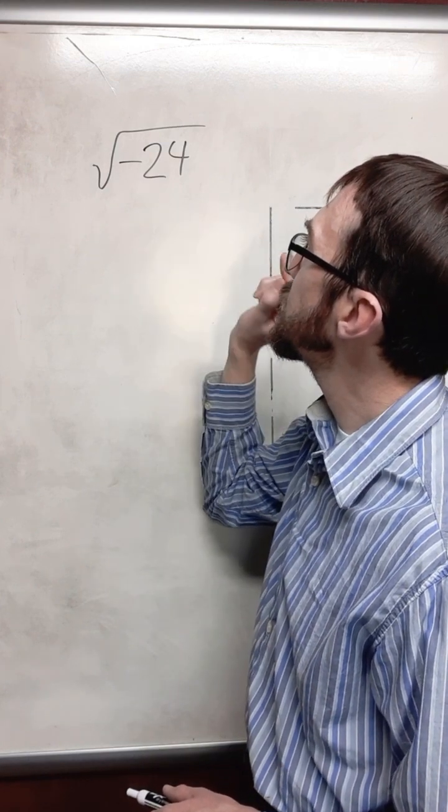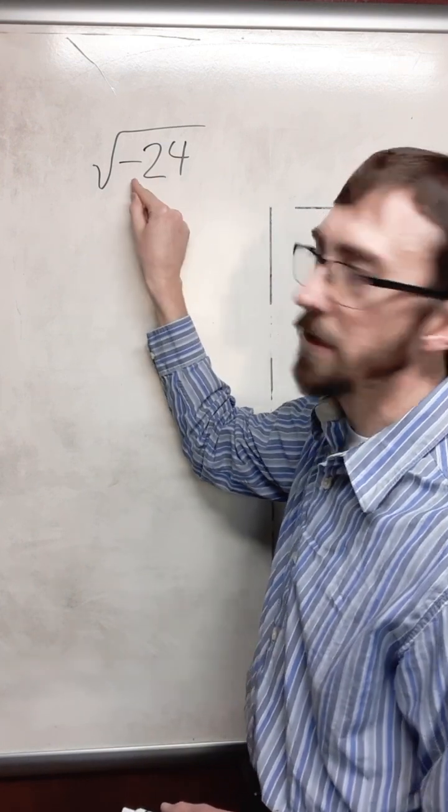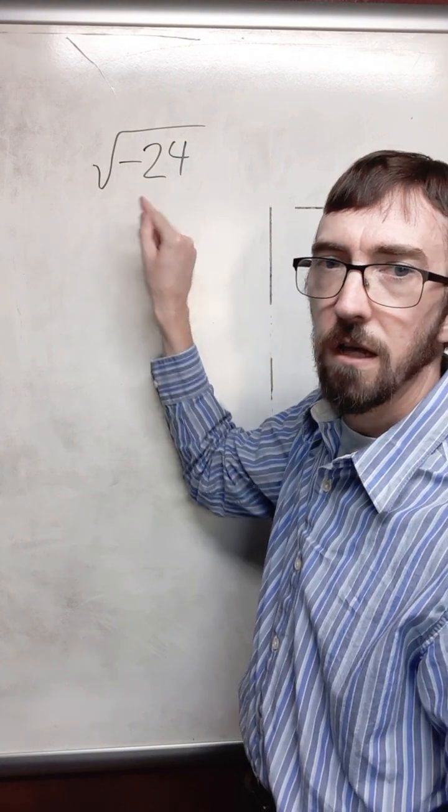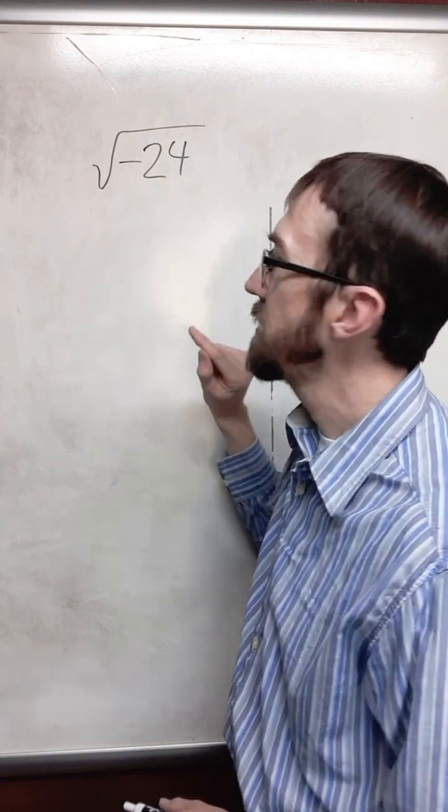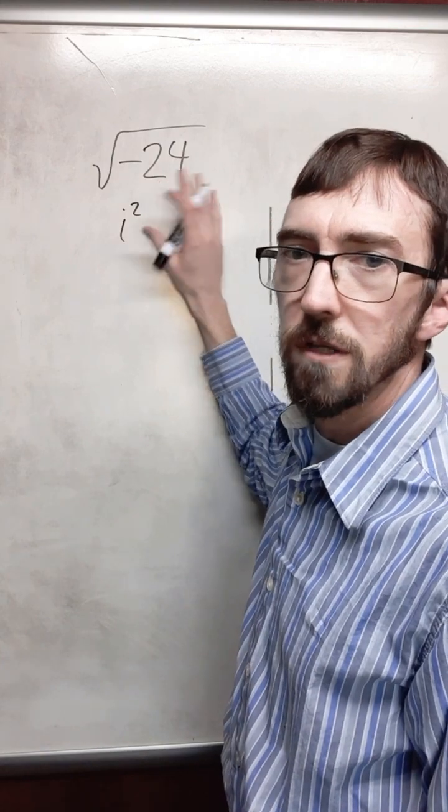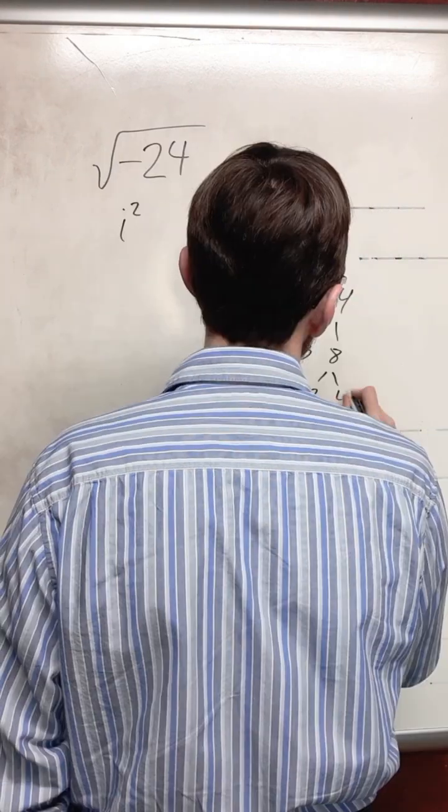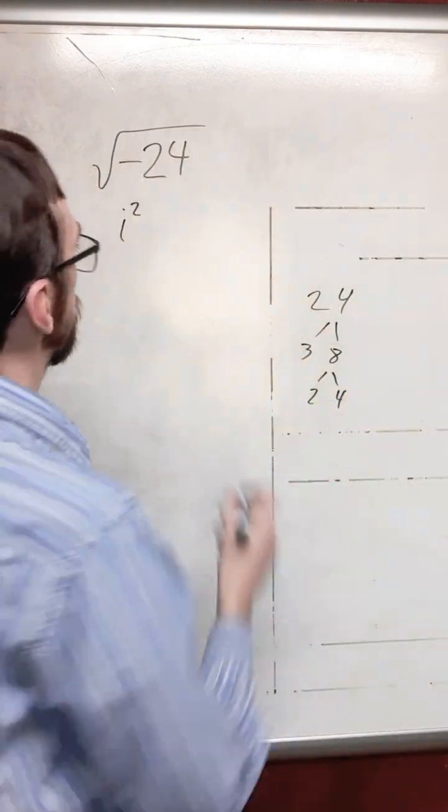We are going to look at negative 1, that is i squared, and then we're going to look at 24 as factors. 4 is 2 squared.